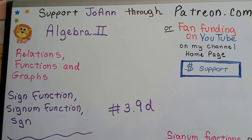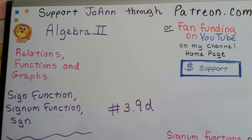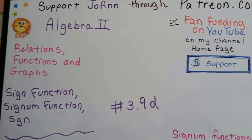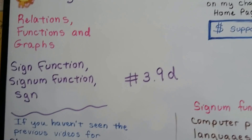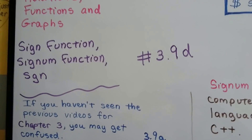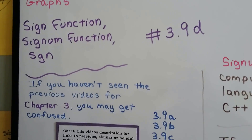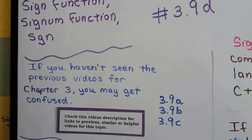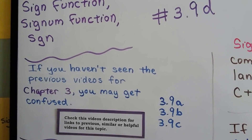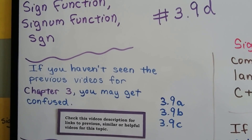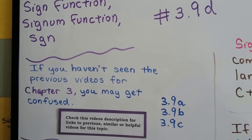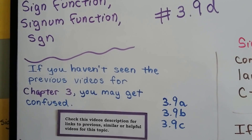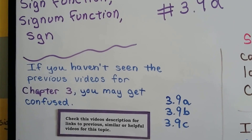Algebra 2, 3.9d — the signum function, or sgn. I'll explain what sgn is. If you haven't seen the previous videos for chapter 3, you might get confused. We're on the fourth video for this lesson. If you want to see 3.9a, b, or c, just click on this video's description and you can go right to them.